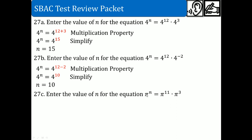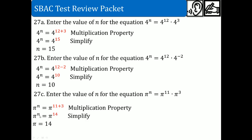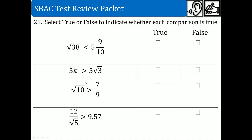Next, notice this is similar but instead of 4 it becomes the constant pi. Again, you combine the exponents because they have the same base and you are multiplying: 11 plus 3 becomes 14, so n equals 14. These are all multiplication properties of exponents — keep the base the same and add the exponents.